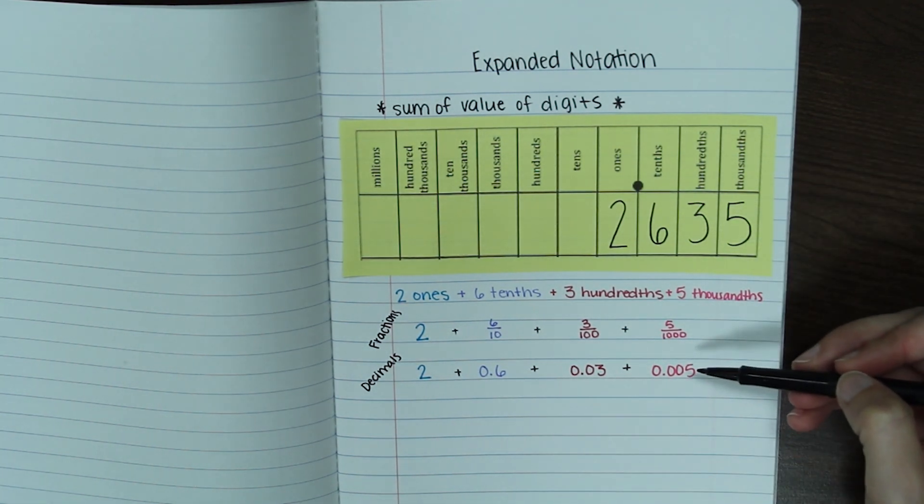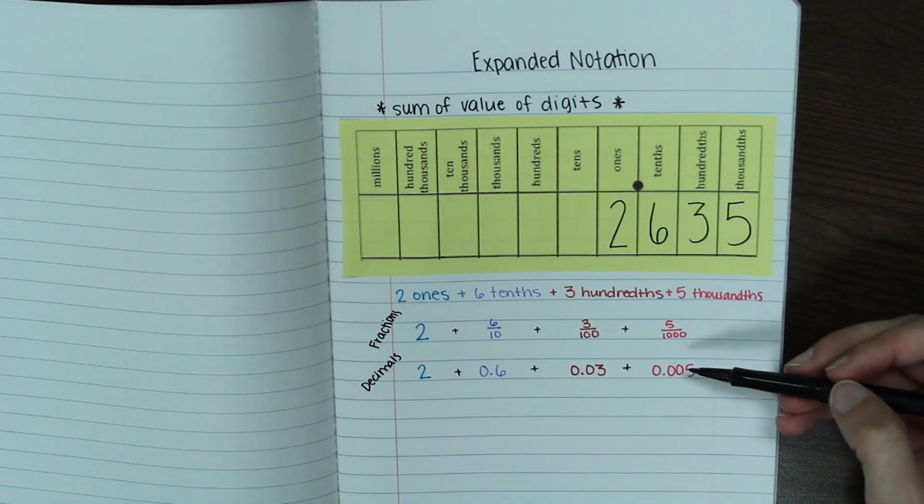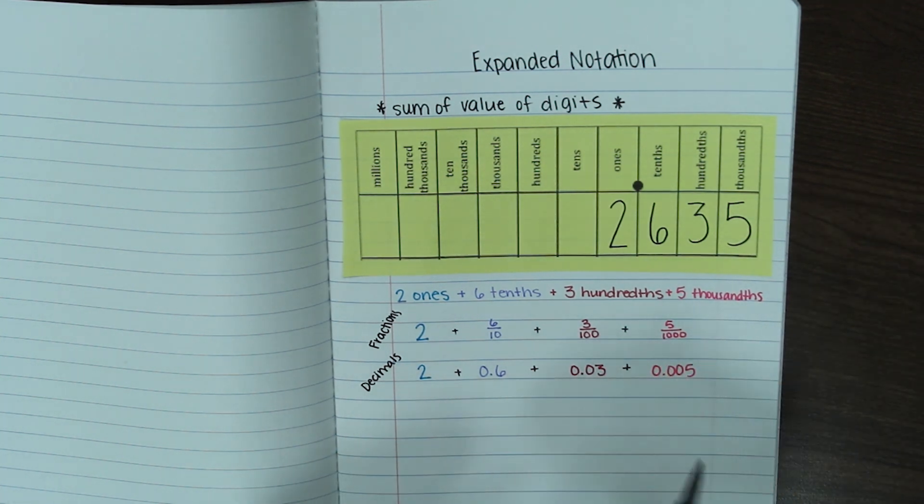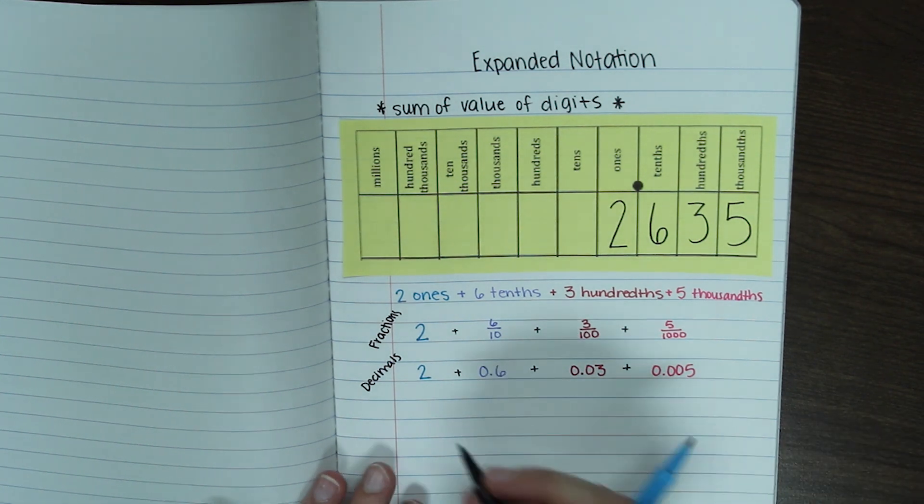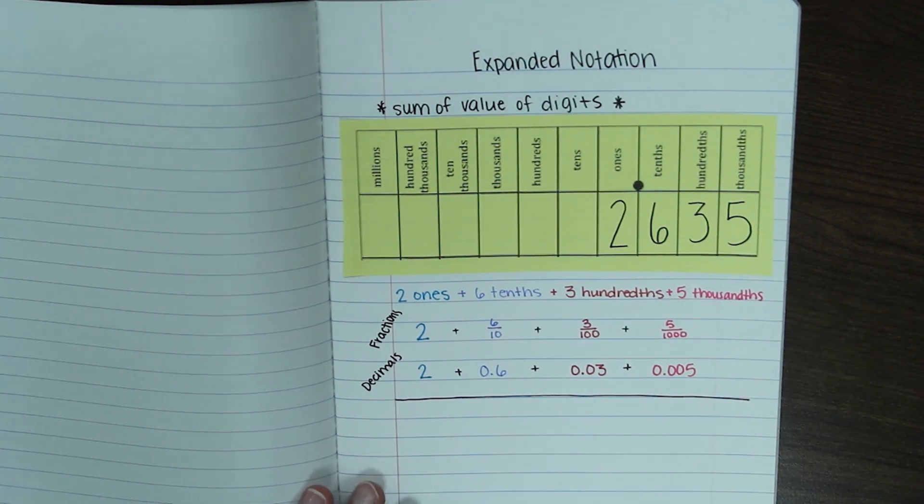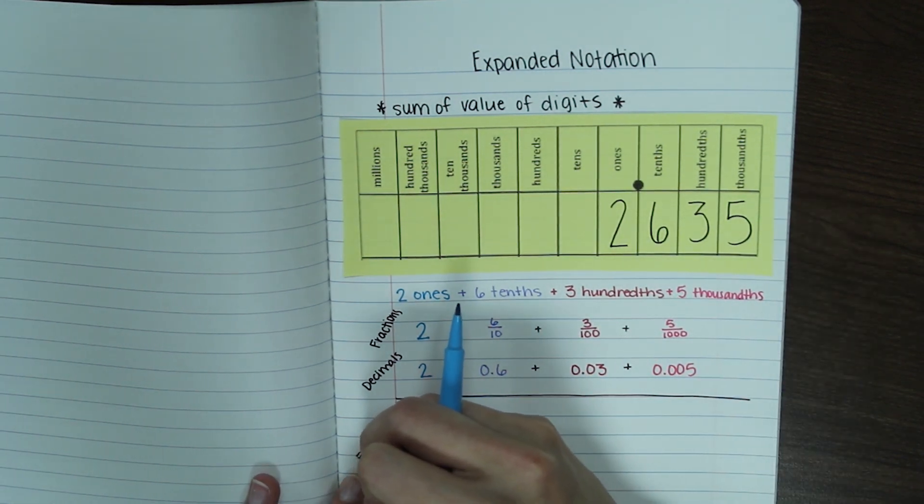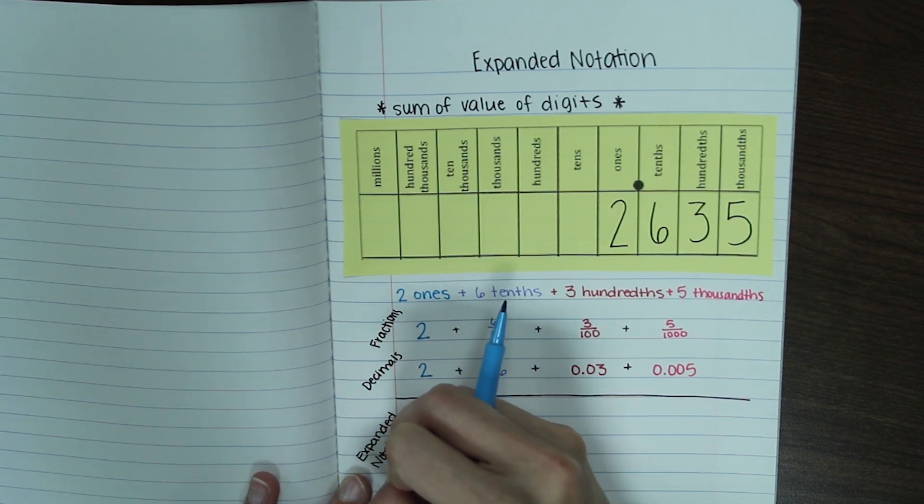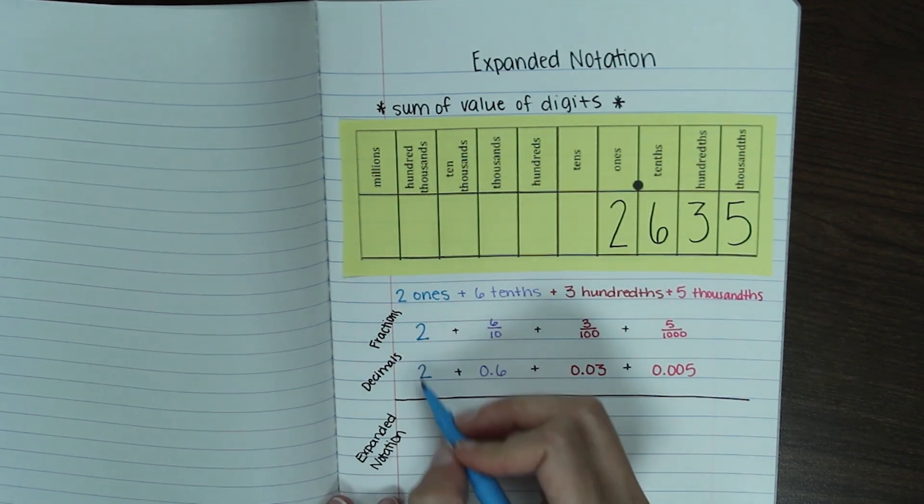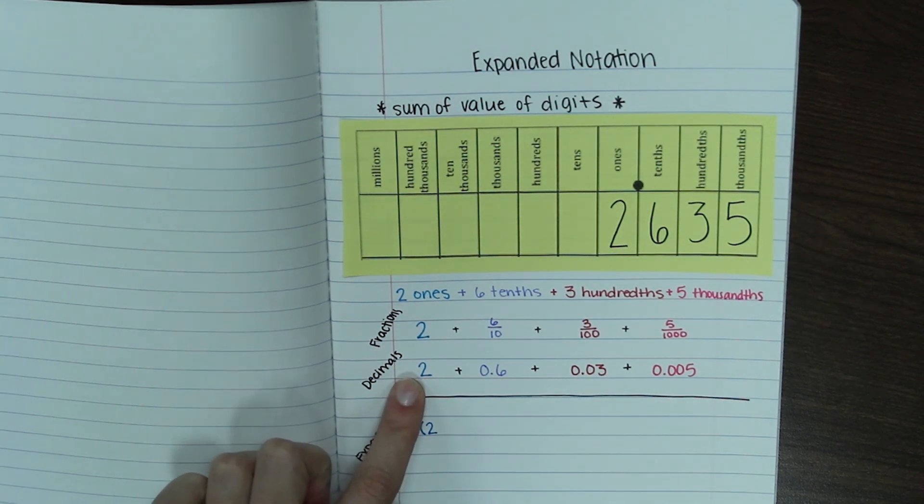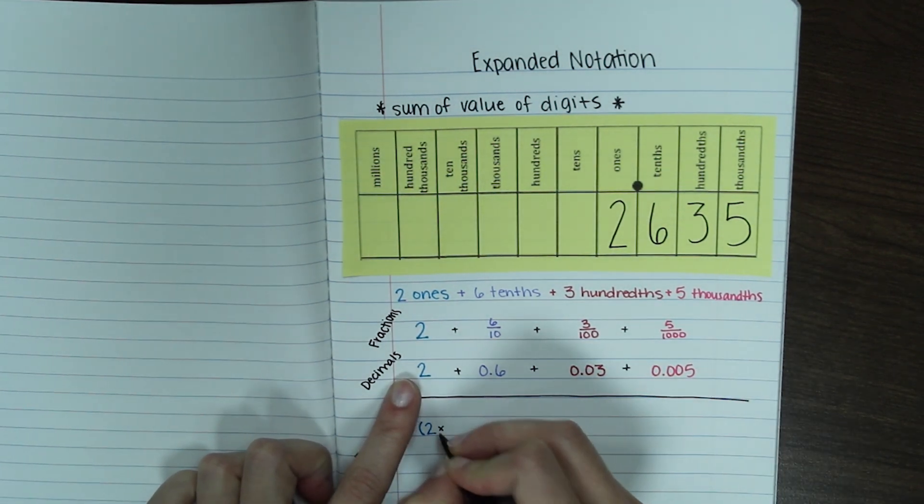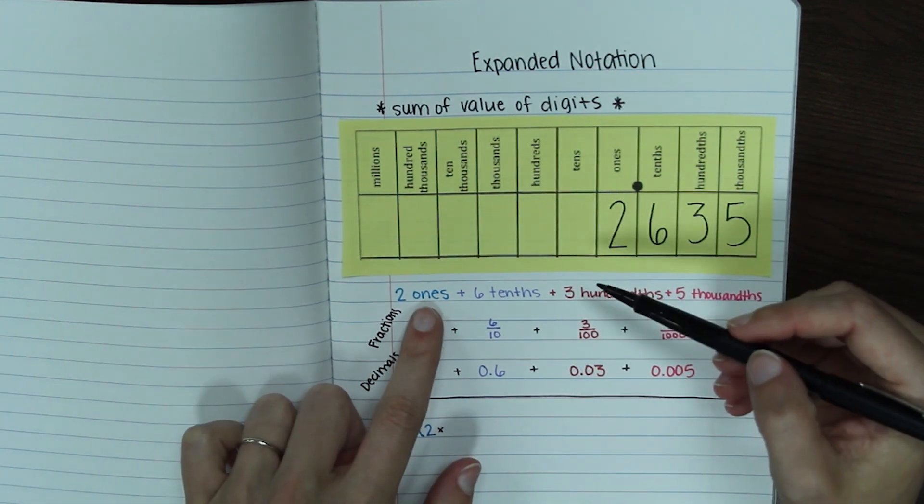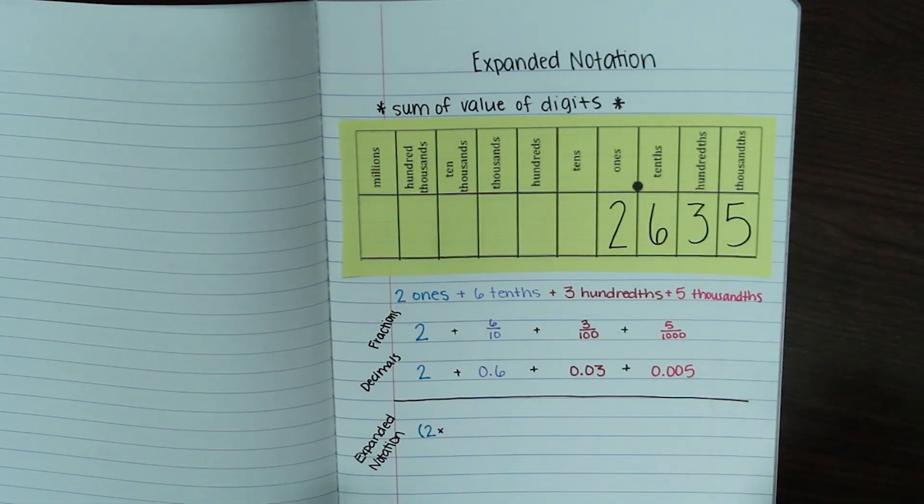So these are not expanded notation. These are expanded form, which you've done when you were younger. Expanded notation takes these and breaks it apart one more step. So it's going to be each digit times the value of the place value position. It sounds kind of confusing, but it's not too hard. And now this is going to be our expanded notation. So the first one we're going to take our two, same number we wrote here. Now we're going to multiply that by the value of its place value position. It's in the ones place. So the value of the ones place is one.